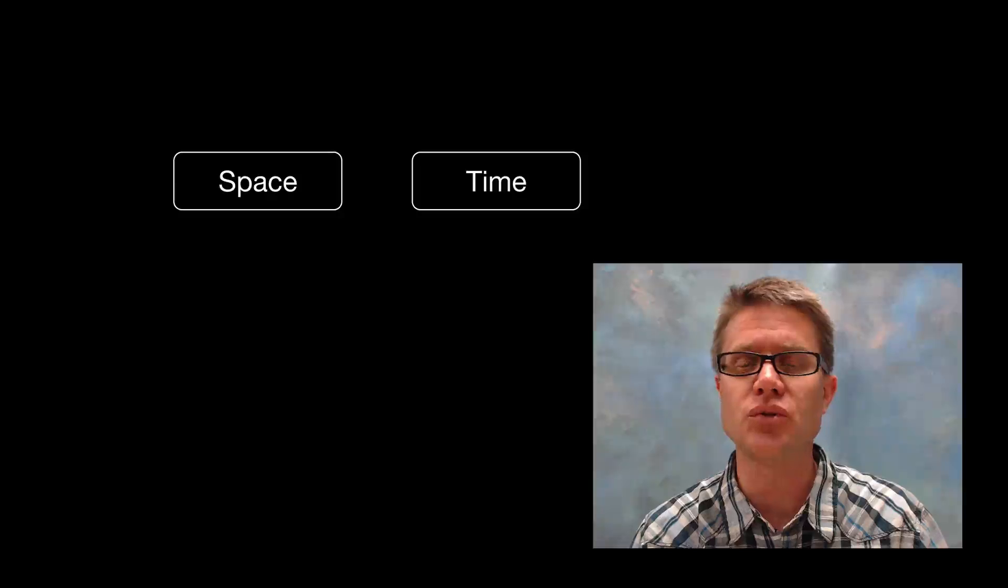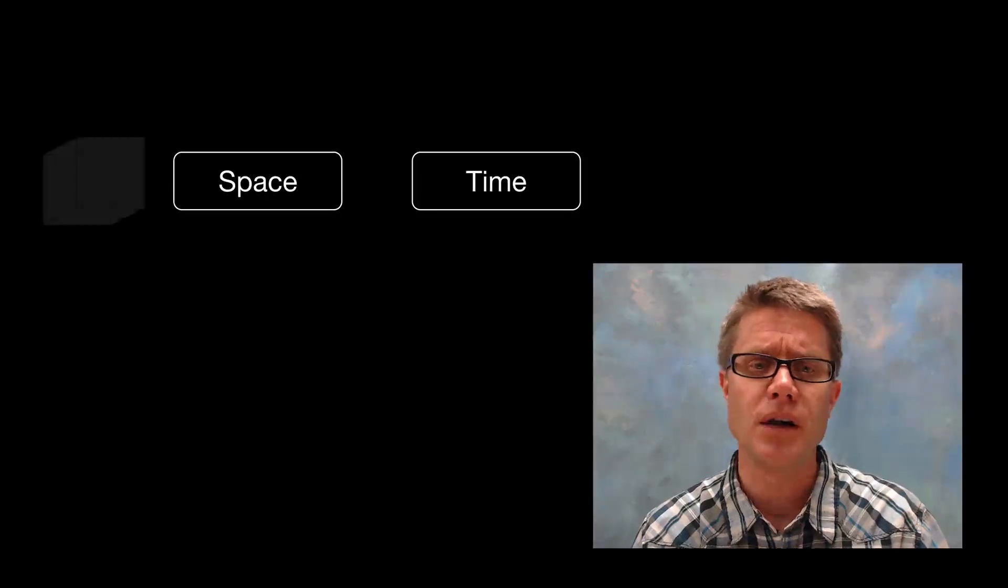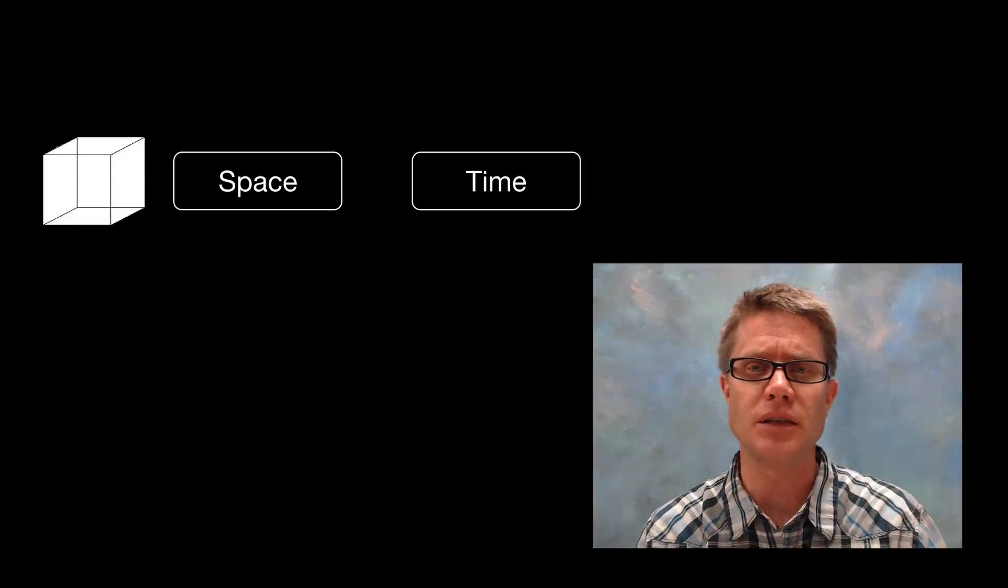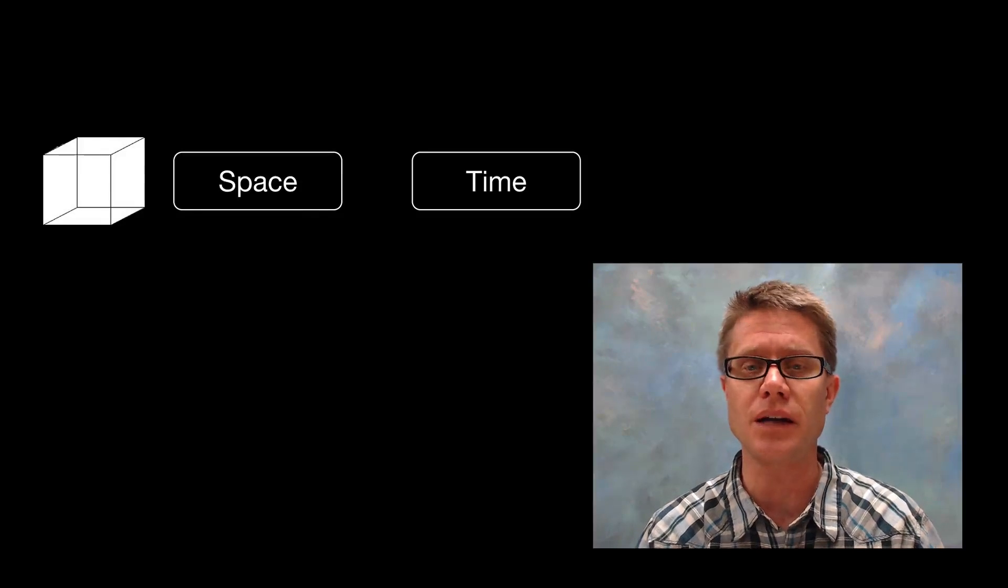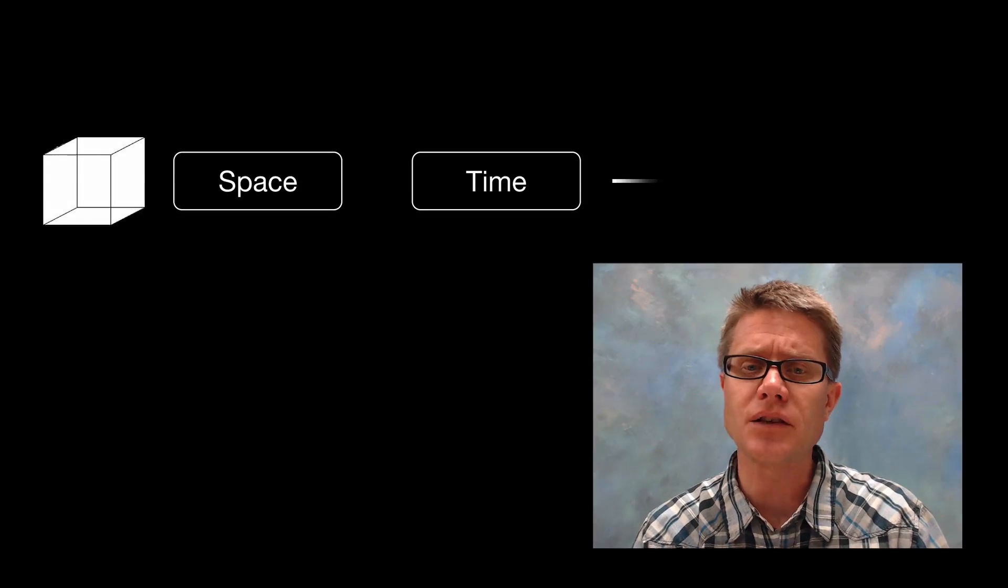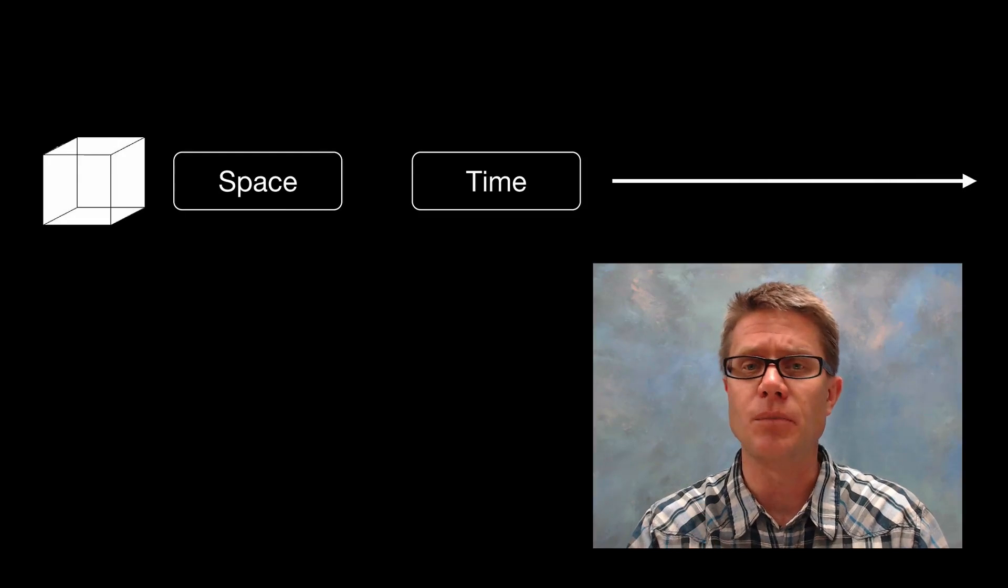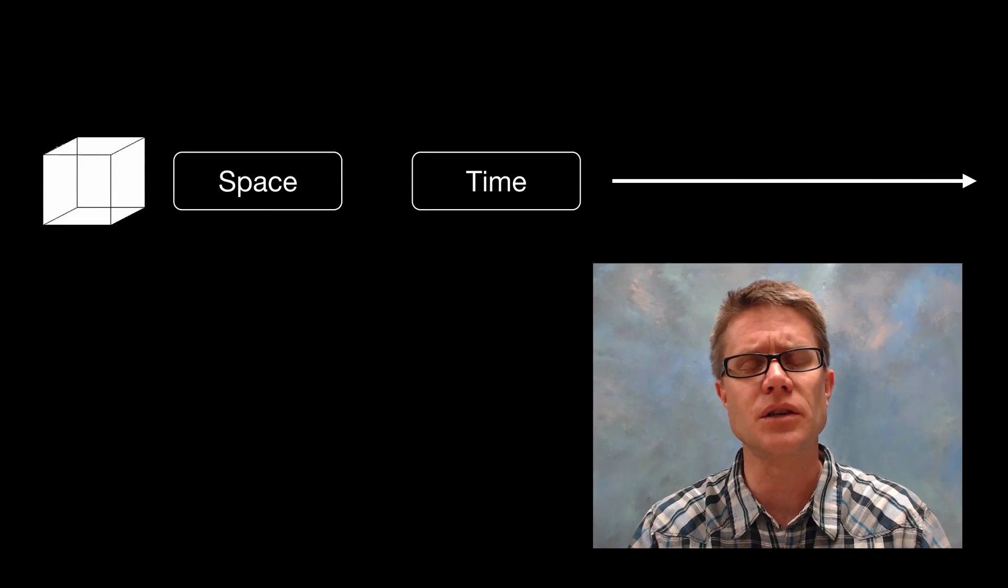In normal life we treat space and time separately. We have the three dimensions of space - it's the area where we move around in, our length times width times height. We treat that separate from time - today, tomorrow, the next day. We think of time as a different dimension that just moves forward.